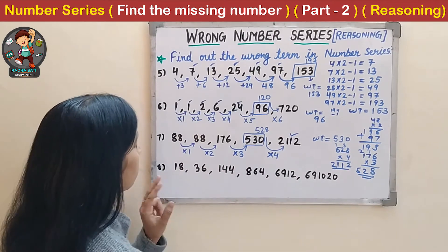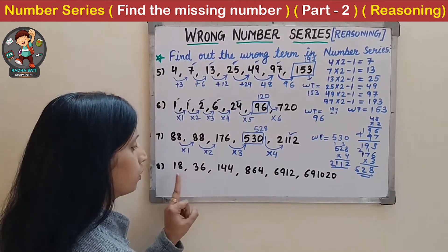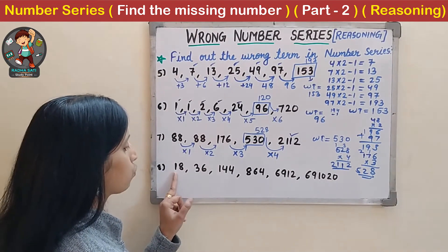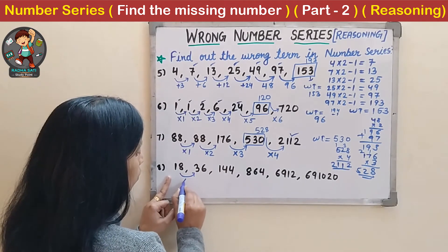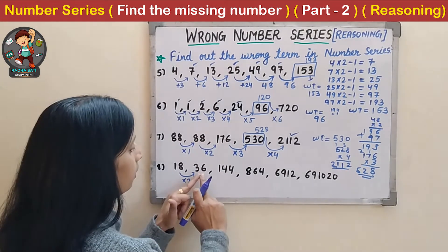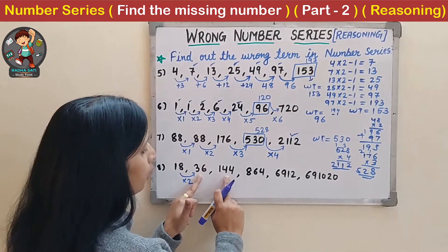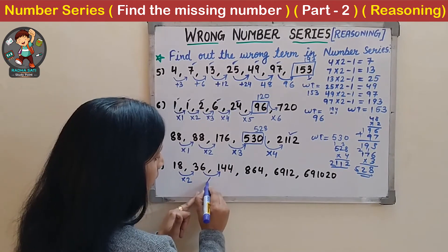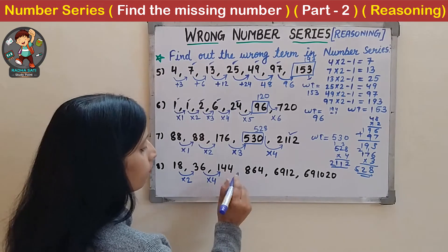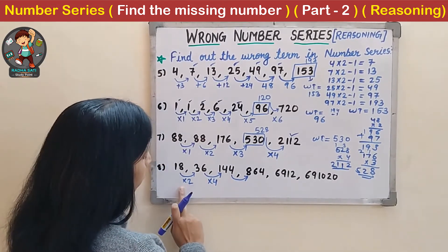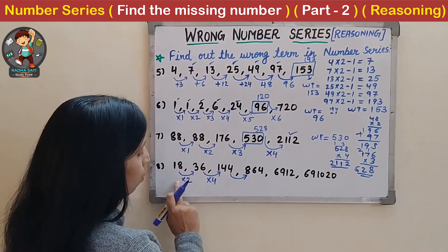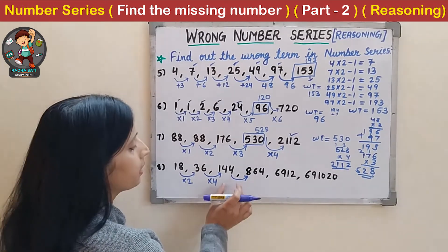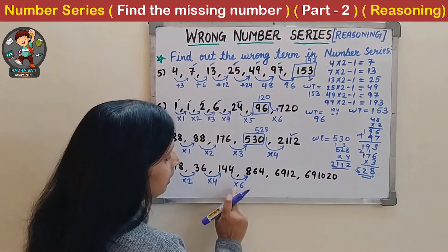Now the next question: 18, 36. Numbers are increasing and the second number is twice the first - multiplication by 2. Then 36 and 144: 36 × 4 = 144. So the pattern is consecutive even numbers: multiplication by 2, then by 4. Next should be multiplication by 6.